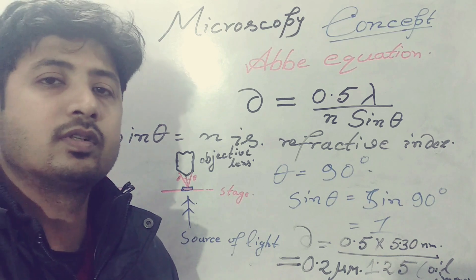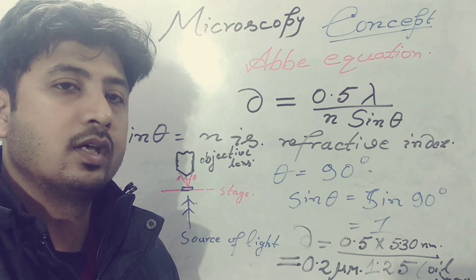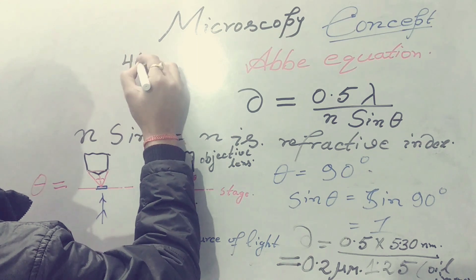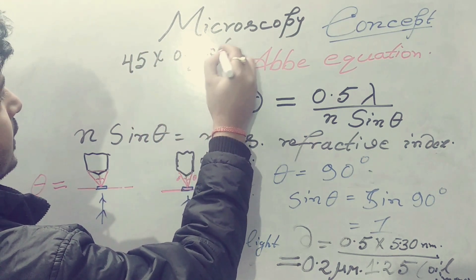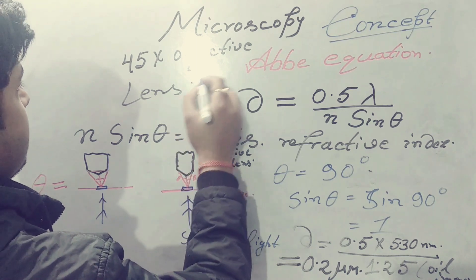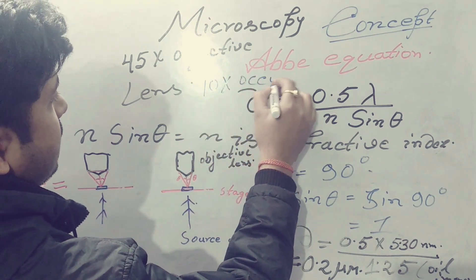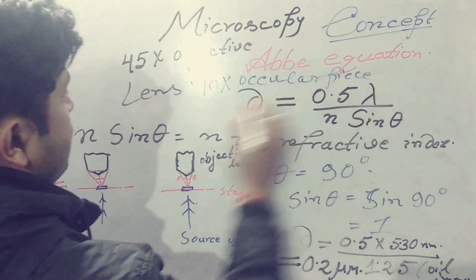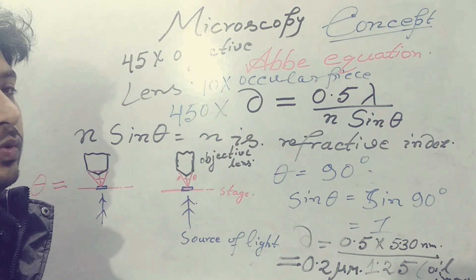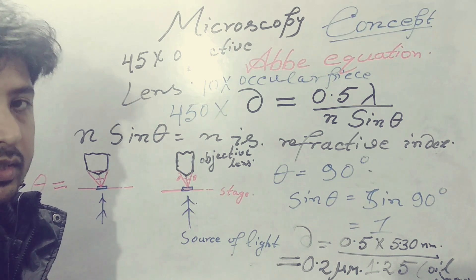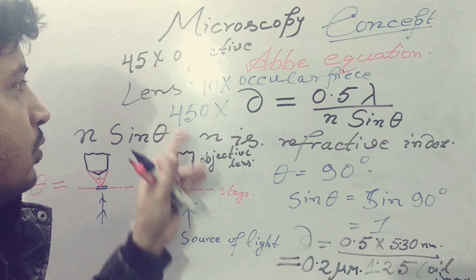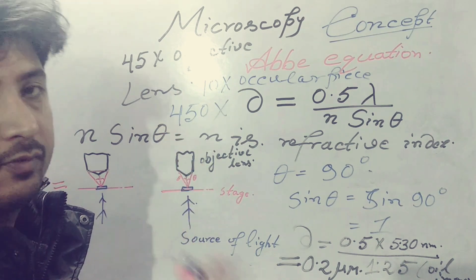You can also consider the magnification of the objective lens and the ocular lens you are using. For example, using a 45x objective lens with a 10x ocular eyepiece gives a magnification of 450x. You can separate two points that stick together through a microscope up to 450x magnification using a 10x ocular eyepiece with a 45x objective. Similarly, using a 10x objective lens with a 10x ocular gives a total magnification of 100x.